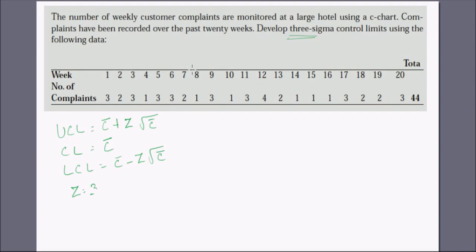For the C chart, the central line is the average number of complaints, the upper control limit is C-bar plus Z times the square root of C, and the lower control limit is C-bar minus Z times the square root of C, with Z equal to 3. We have 20 weeks with a total of 44 complaints.